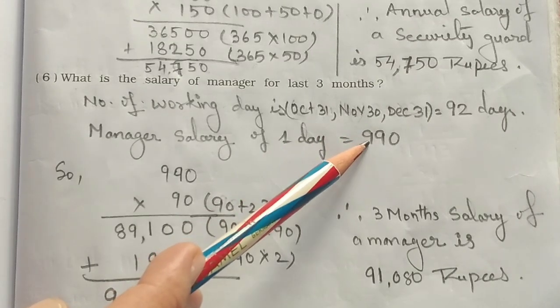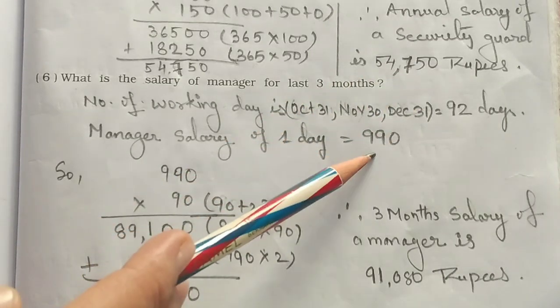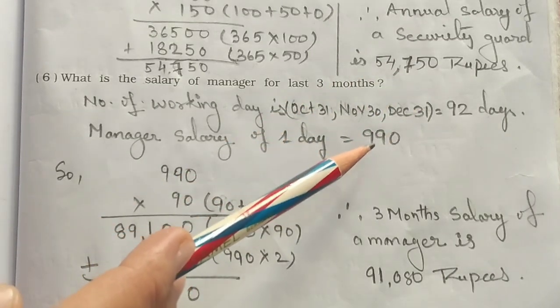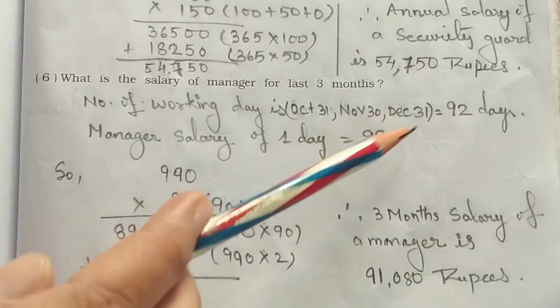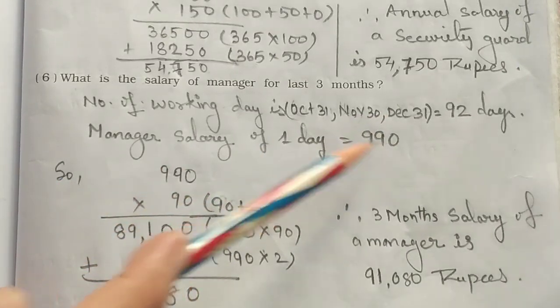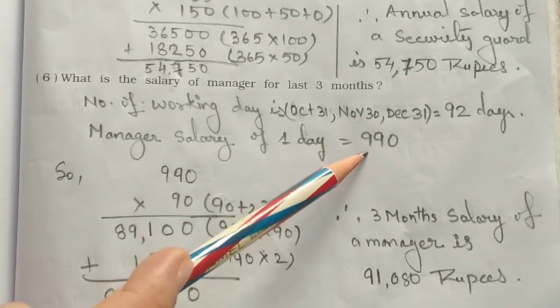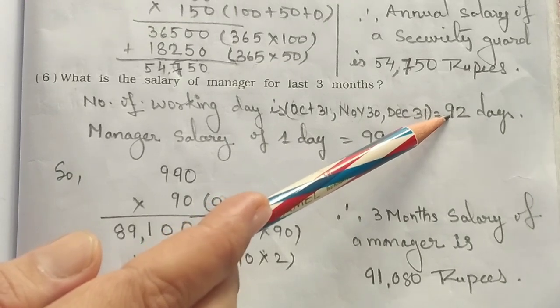The number of working days is 92 days. The manager's one-day salary is 990 rupees according to the question. So we multiply 990 × 92.